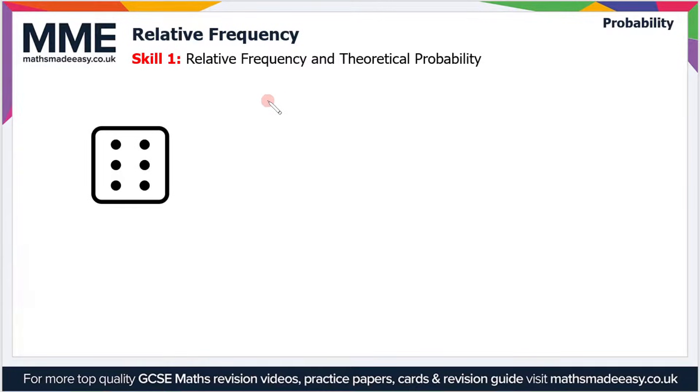well in theory the probability of rolling a six on a dice is just one-sixth. So that's the theoretical probability.